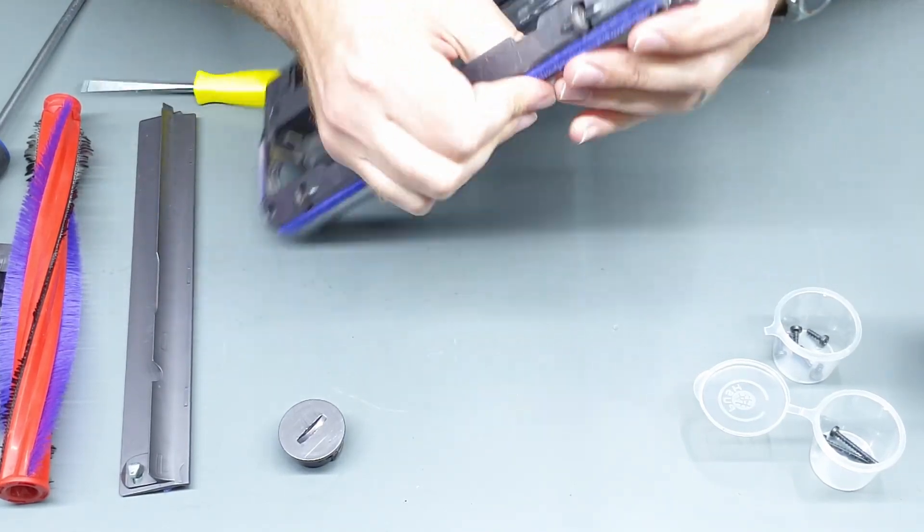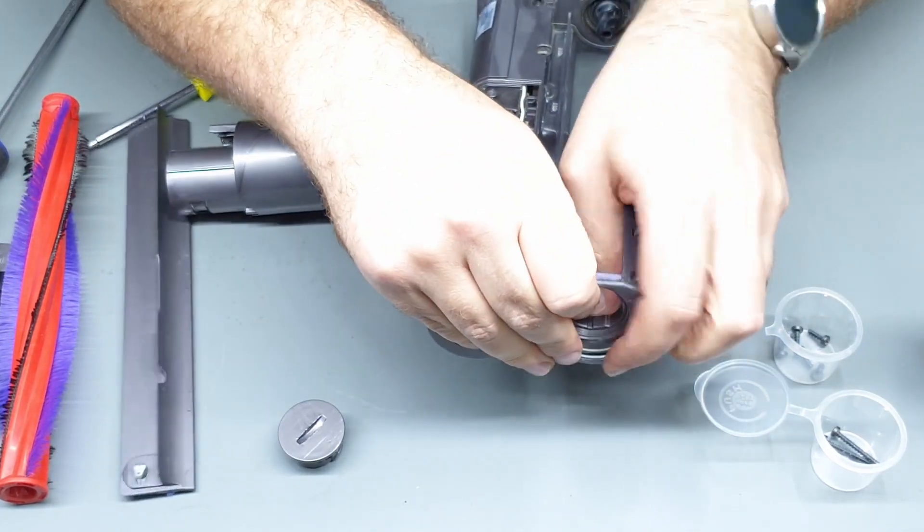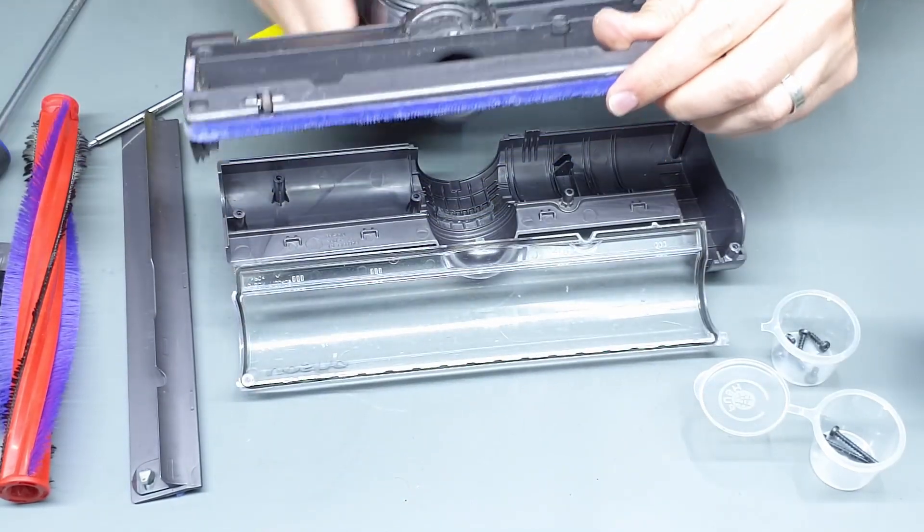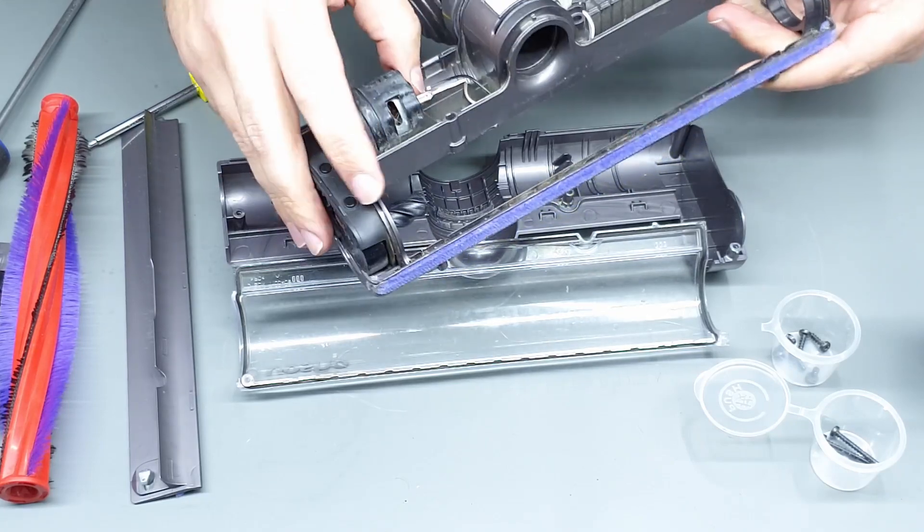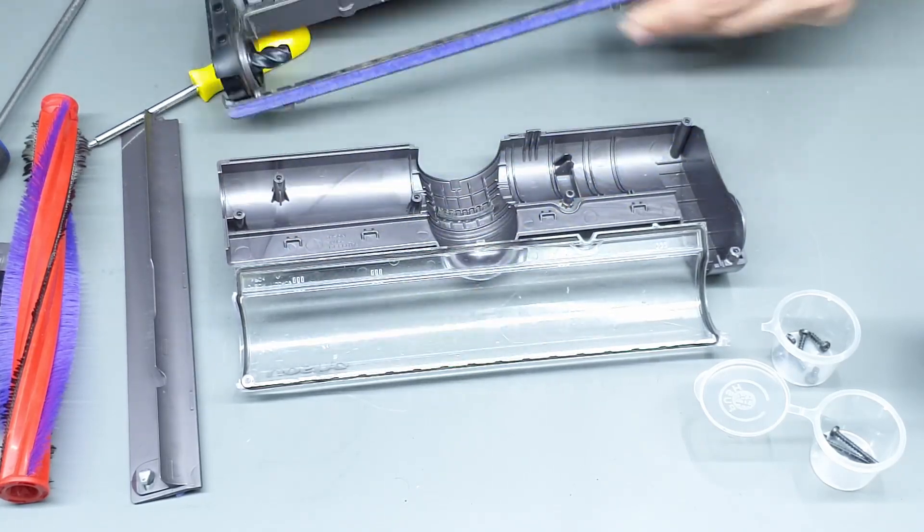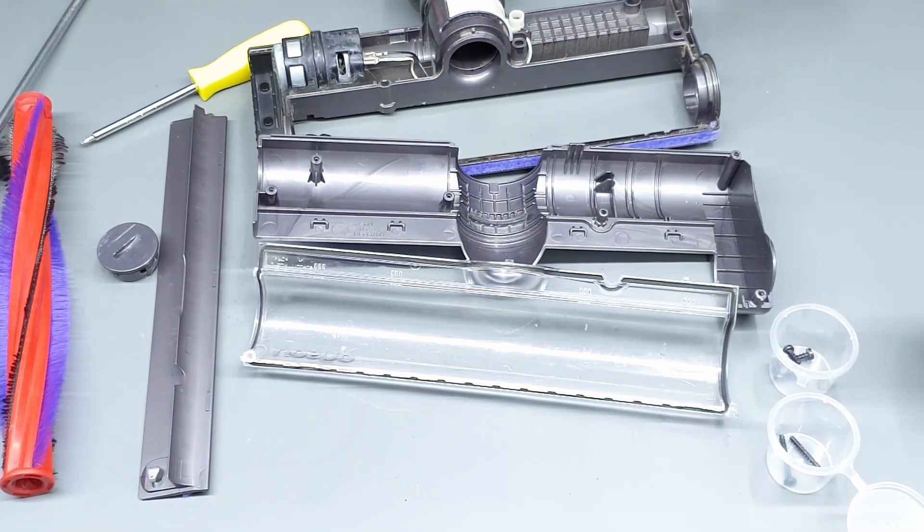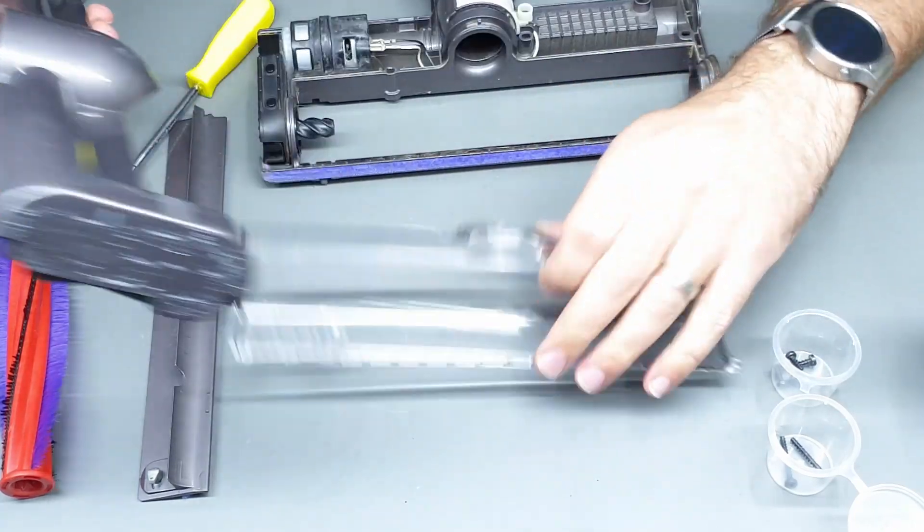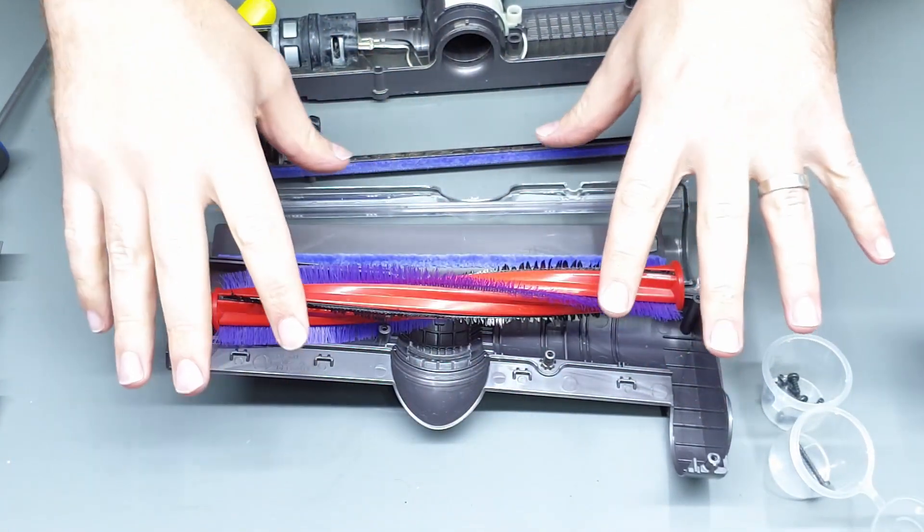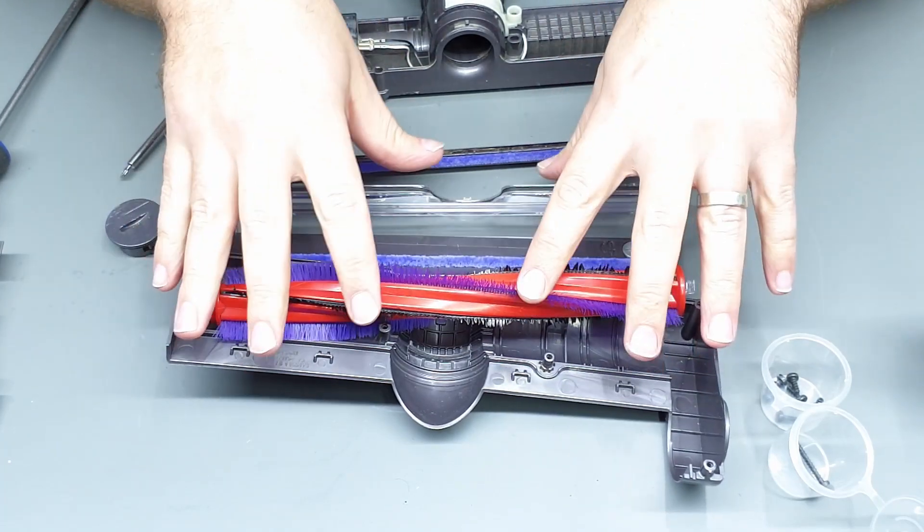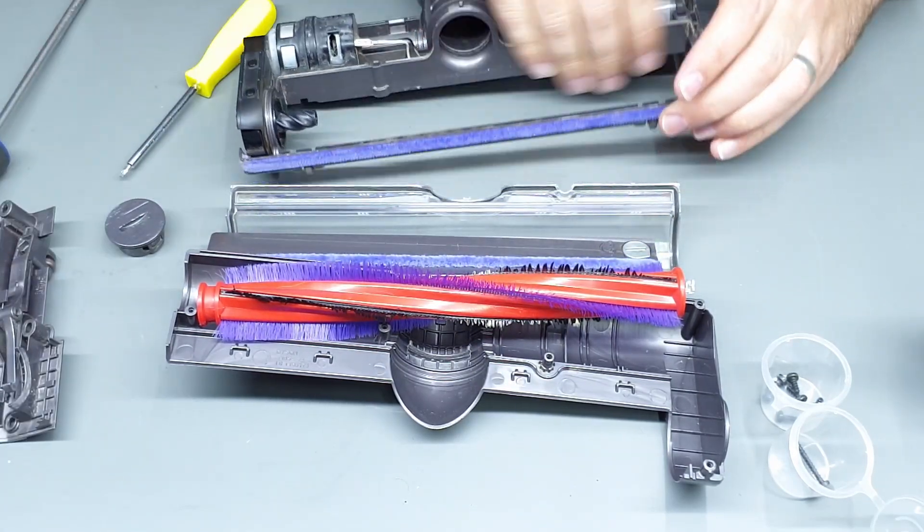So once you've got all the screws out you can also separate this piece from the body and then you can clean out in here. There's the motor so yeah be wary of that. Obviously it's not going to do anything but you don't want to get that wet. You can clean out this sort of stuff and this part here. So this piece, this, this and this are probably safe to wash in water and get submerged as long as you make sure they're thoroughly dry before you put it back together and yet do not wash these in any sort of water just wipe out where the cloth will be enough.